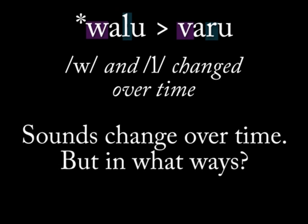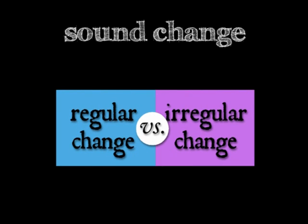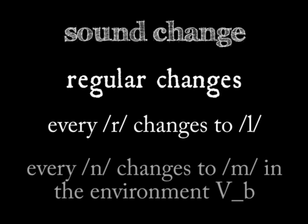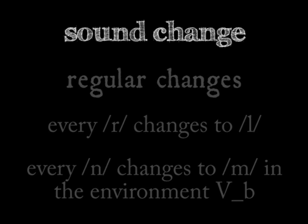Historical linguistics often splits sound change into two halves: regular changes versus irregular changes. A regular sound change takes place systematically and in every instance of a given environment. For example, if a language undergoes a sound change where 'ur' becomes pronounced a certain way, every 'ur' will change. Similarly, if a sound turns into another sound between a vowel and a 'b', then every instance of that sound after a vowel and before a 'b' will undergo that sound change.